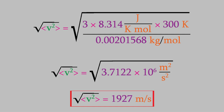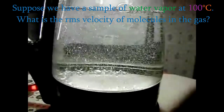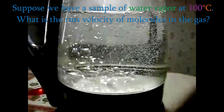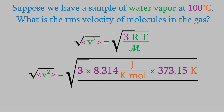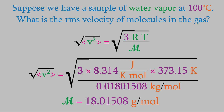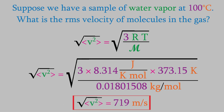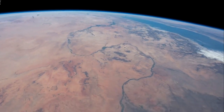Let's try one last problem. Suppose we boil water — what's the RMS velocity of a water molecule at the boiling point, 100 degrees Celsius? We'll use this equation again. The temperature is 100°C, but we need it in Kelvin, so we use 373.15 K. The periodic table tells us water has a molecular mass of 18.01508 grams per mole, or 0.01801508 kilograms per mole. Performing this calculation, the RMS velocity is 719 meters per second — about 1,608 miles per hour. A water molecule at that speed could circle the Earth in about 15.5 hours, as long as it didn't hit any other molecules.